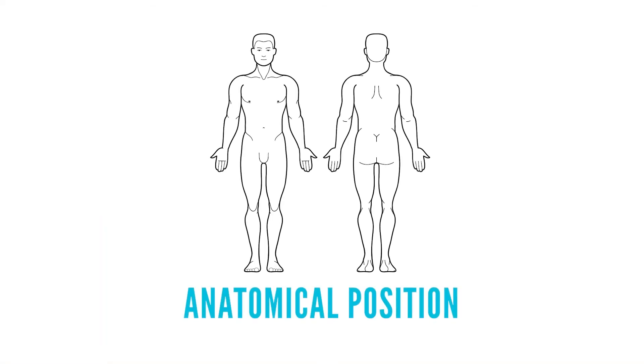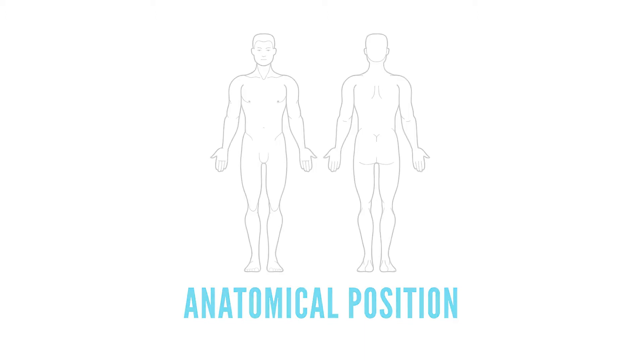Let's dive into some key foundational elements you'll need to understand throughout this course. The position shown in this picture is known as the anatomical position. It's used to describe the positions of anatomical structures, as well as the positions of these structures in relation to one another and the body as a whole.